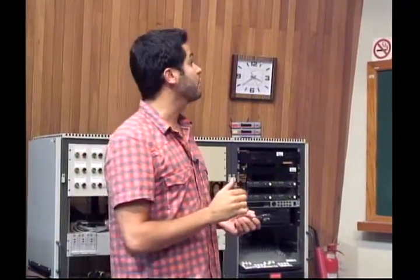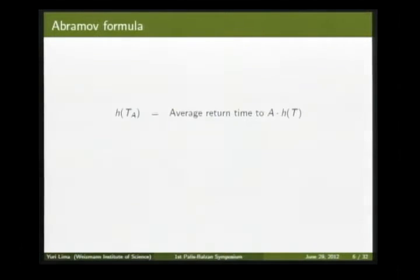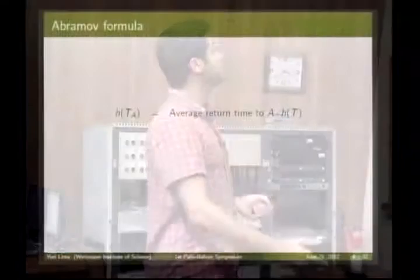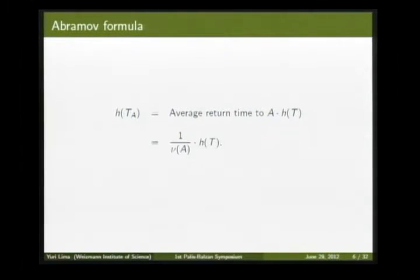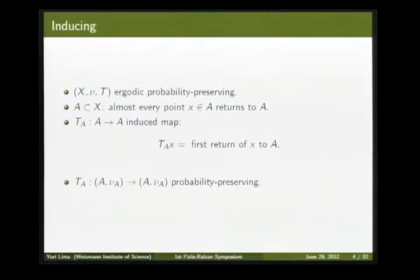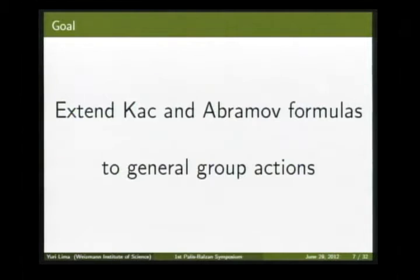The second result talks about entropy: the entropies of T_A with respect to measure μ_A, and of T with respect to measure μ. This is given by Abramov's formula, which says there is a simple relation between these two entropies — their quotient is exactly the average return time, which in view of Kac's formula is nothing but one over the measure of the set times the initial entropy.